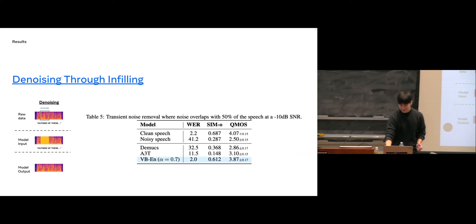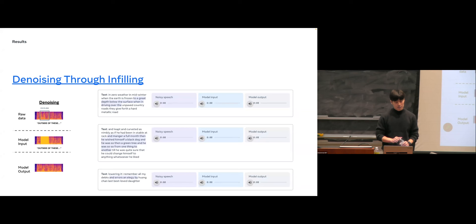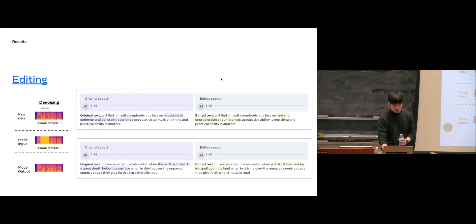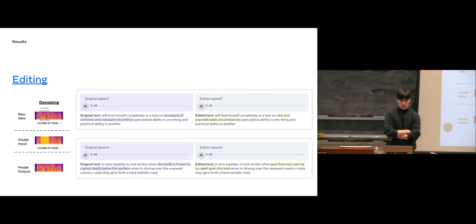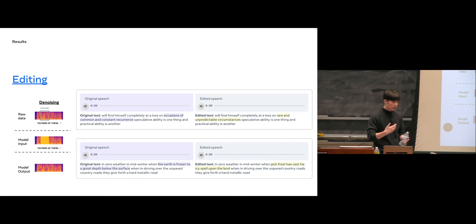The model infills from both sides since it's not autoregressive — it sees future context as well. We can also do editing: changing 'occasions of common and constant recurrence' to 'rare and unpredictable circumstances' in the original audio. There are some small artifacts in the output, but as the model is trained on more data and scales up, this should be solvable.